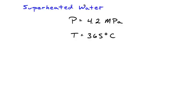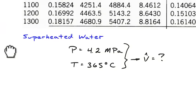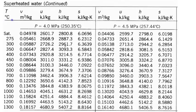We're dealing with superheated water and we want to figure out, at a pressure of 4.2 megapascal and a temperature of 365 degrees C, the specific volume at these conditions using these two intensive variables. Going to the superheated steam tables, we see pressures at 4 megapascal and 4.5 megapascal, but we want 4.2 megapascal.